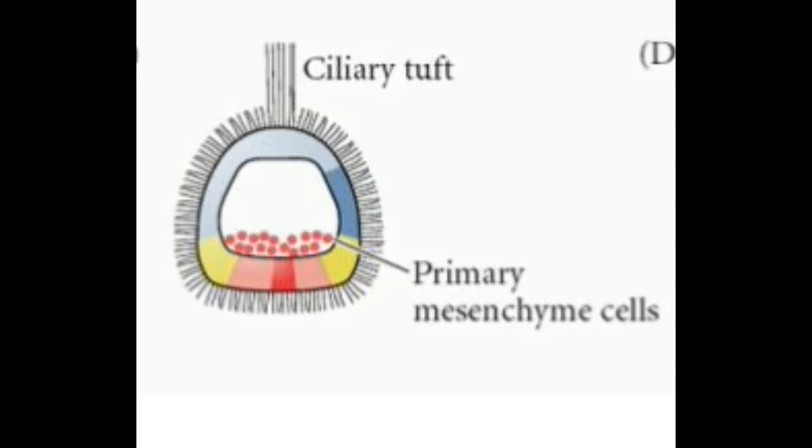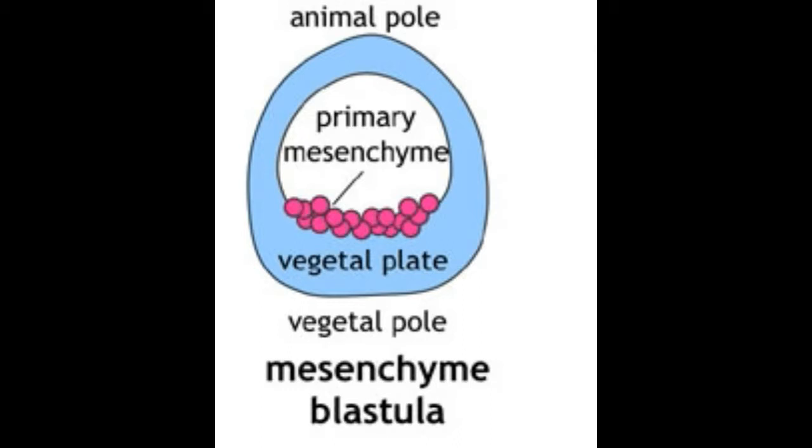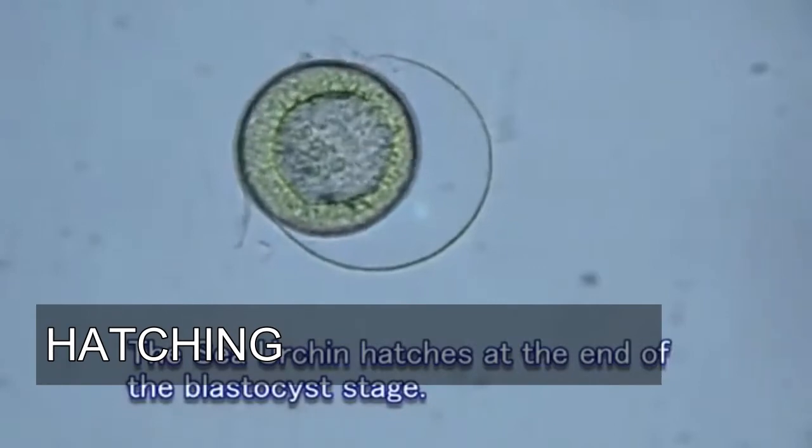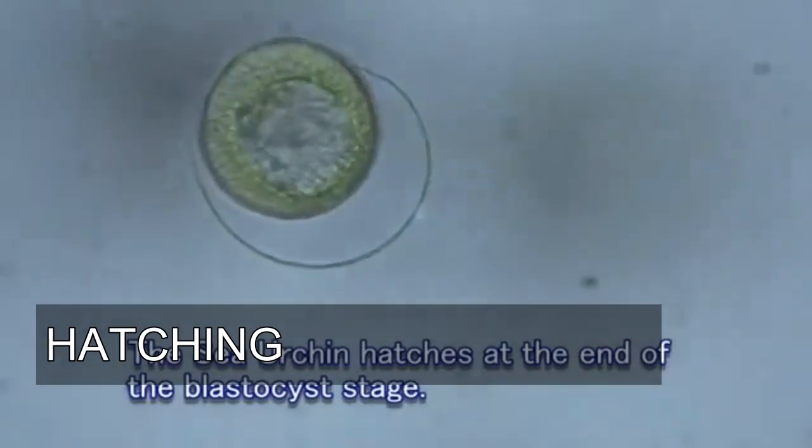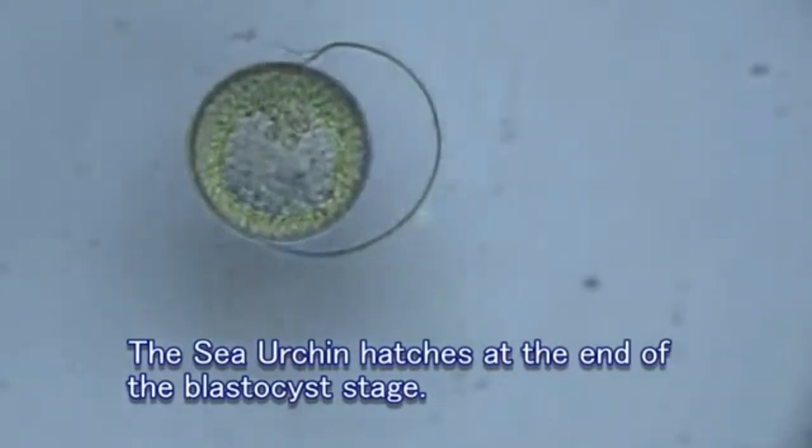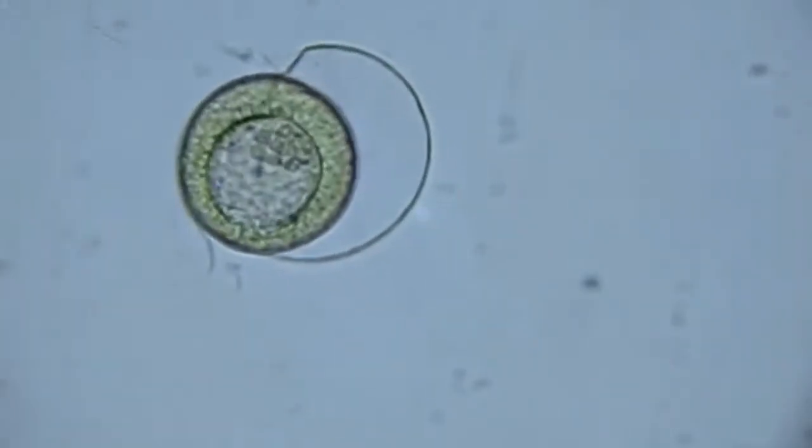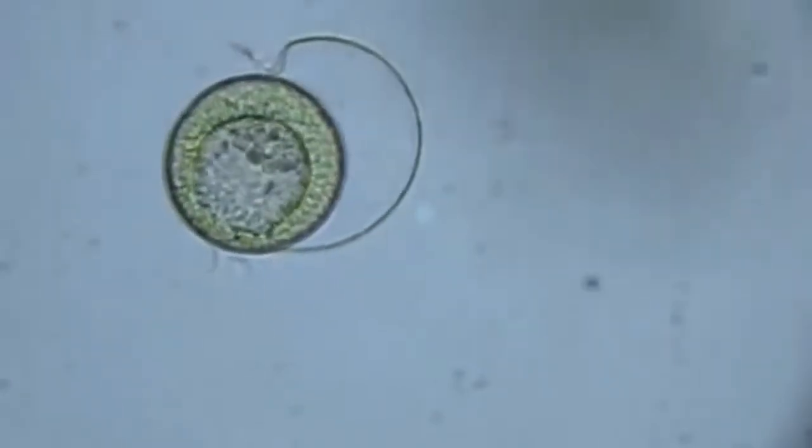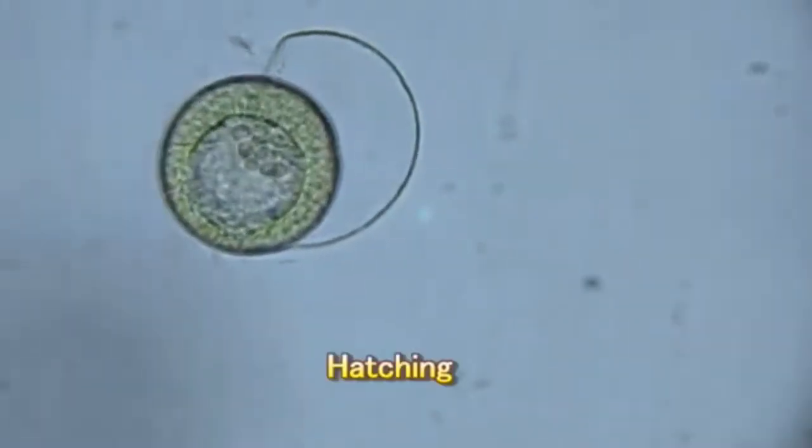Approximately 64 primary mesenchyme cells eventually form. During the late blastula stage, when primary mesenchyme cells are ingressing into the blastocele, the blastula is often referred to as mesenchyme blastula. The blastula begins to rotate within the fertilization membrane through the action of its cilia, which beat synchronously. The blastula produces an enzyme called the hatching enzyme. The hatching enzyme weakens the fertilization envelope, and movements of the blastula eventually rupture the fertilization envelope, allowing the ciliated blastula to hatch.